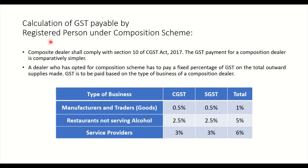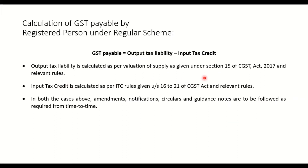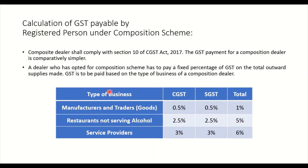Now, what is the GST payable by a registered person under the composition scheme? A composition dealer shall comply with section 10 of the CGST Act 2017. The GST payment for a composition dealer is comparatively simpler because the dealer has to pay a fixed percentage of GST on total outward supplies made. GST is to be paid based on the type of business as per an aggregate presentation.